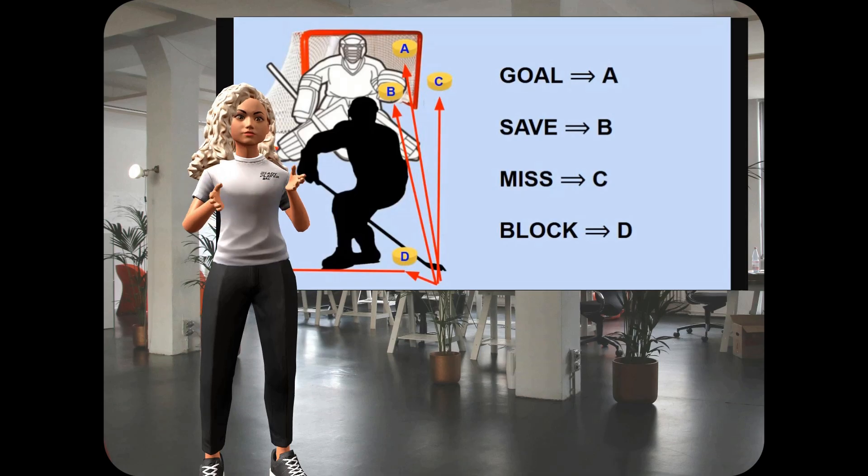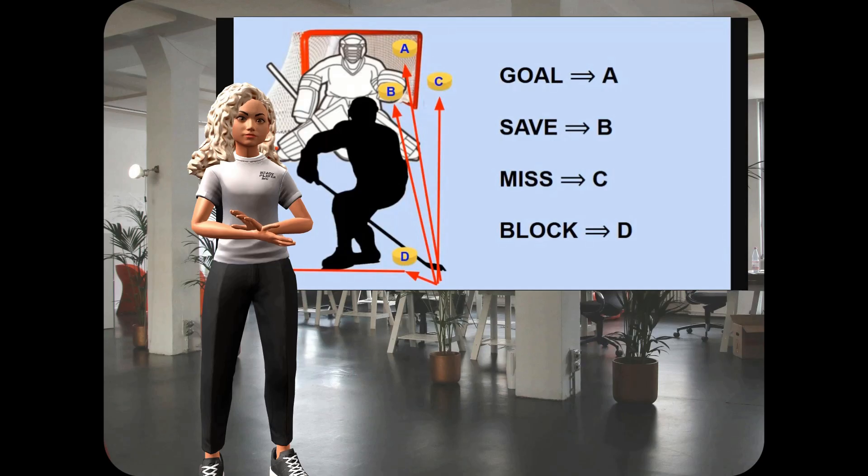Regardless of the intentionality of that shot block, that puck gets deflected away from the goal, and does not become a chance to have scored because of having gone off a stick, or a skate, or a leg, or whatever. So, those are our four types of shots: A, goal; B, save; C, miss; D, block.